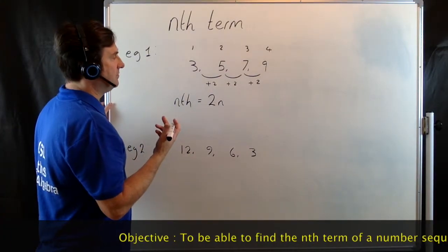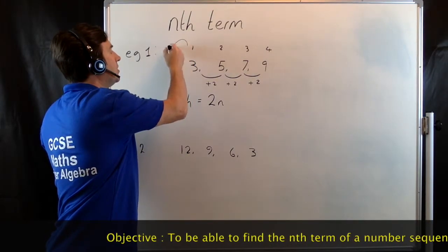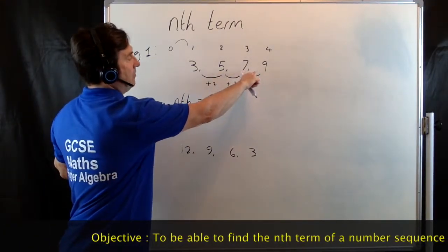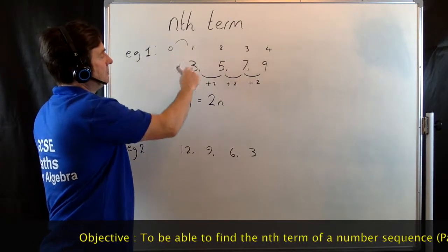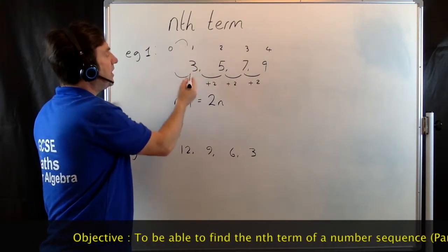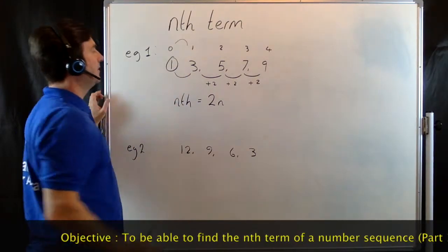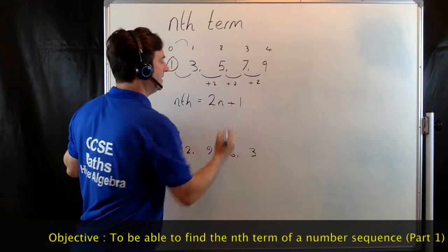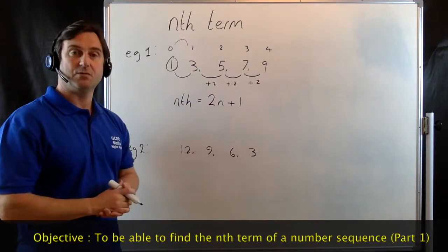Then we need to go back to what the term would have been at the zero term. If we're adding 2 going that way, we must be taking away 2 going that way. So the first term was 3. If you take 2 away from that, you're going to get to 1. Whatever the zero term is, we add to our formula. So our nth term is 2n plus 1.